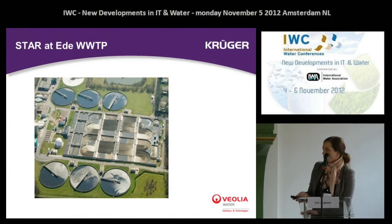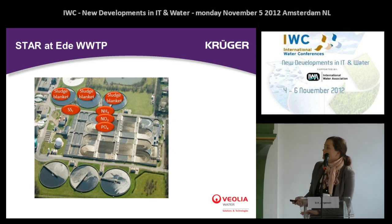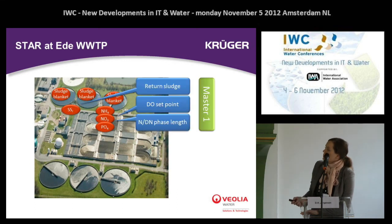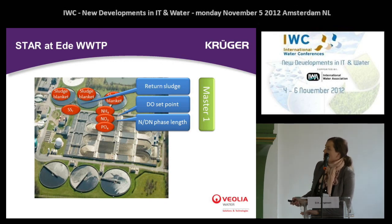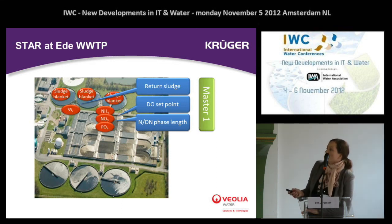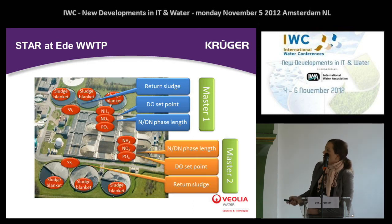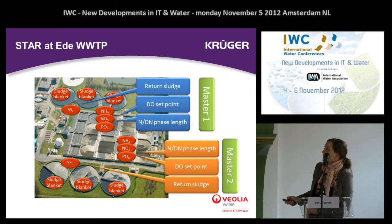Here is a photo of Ede Wastewater Treatment Plant showing the relevant and most important online meters. The picture shows which online meters are used for which control. For example, ammonia, nitrate, and phosphate are used for both the dissolved oxygen set point control and the NDN phase length control. For return sludge control, suspended solids and sludge blanket meters are used. STAR at Ede is set up as two individual masters, using the online sensors of each line for each master line control, meaning they can be controlled separately.